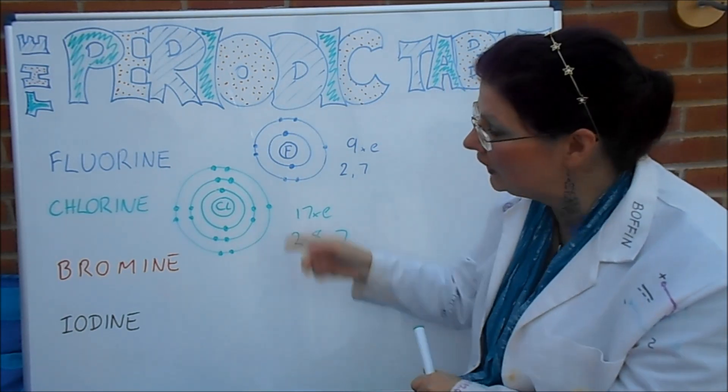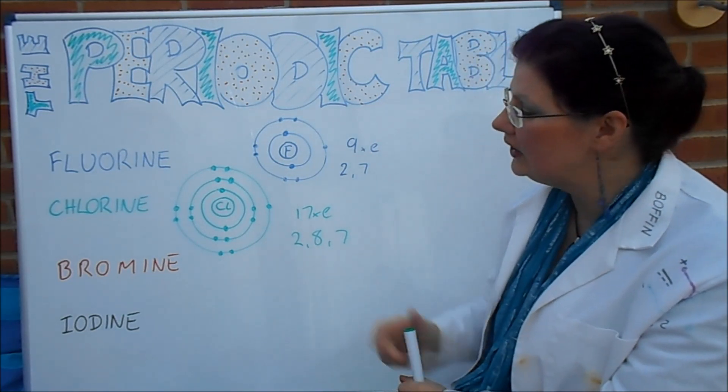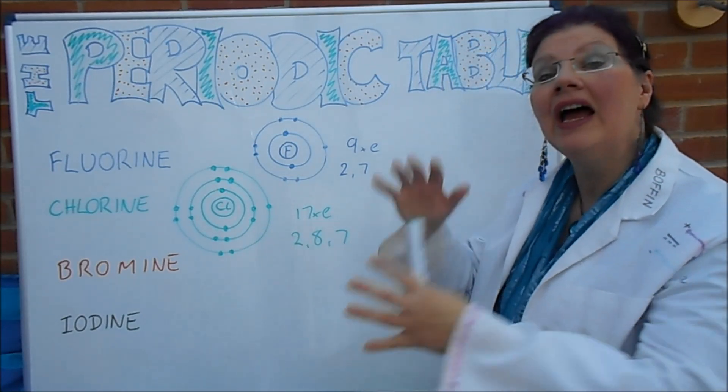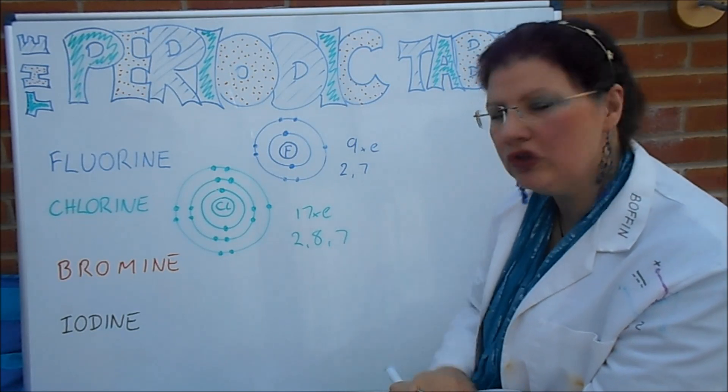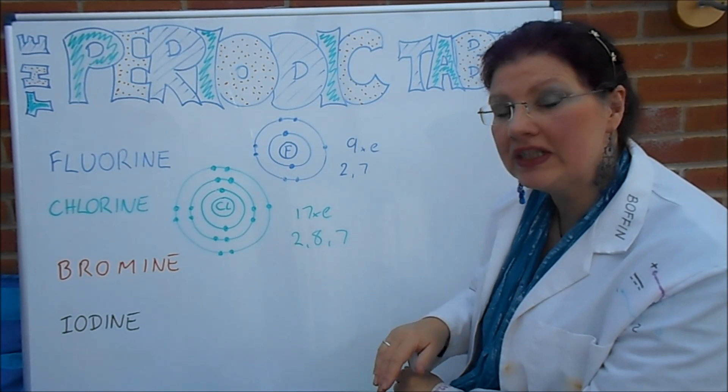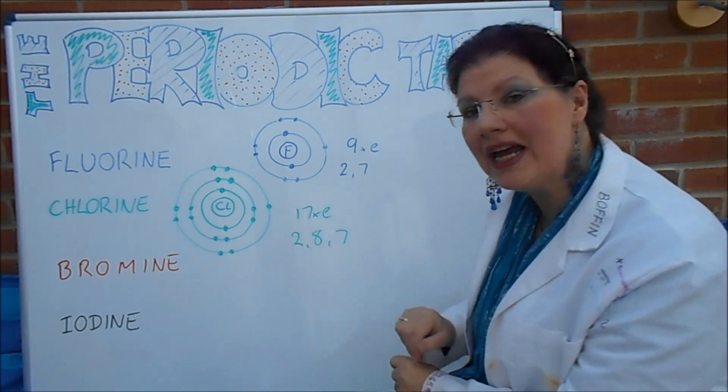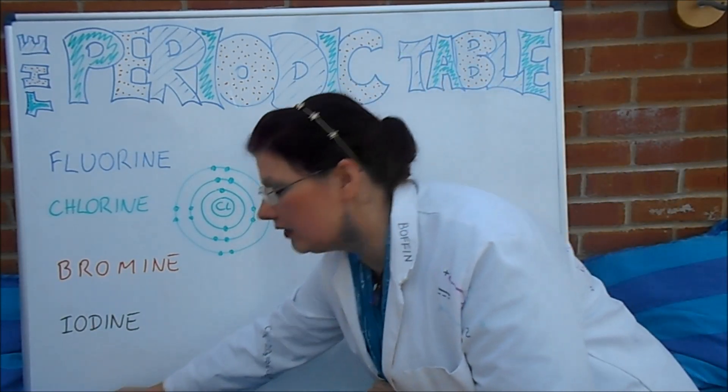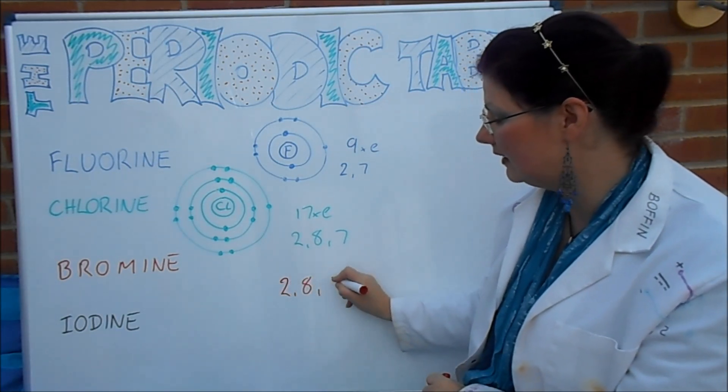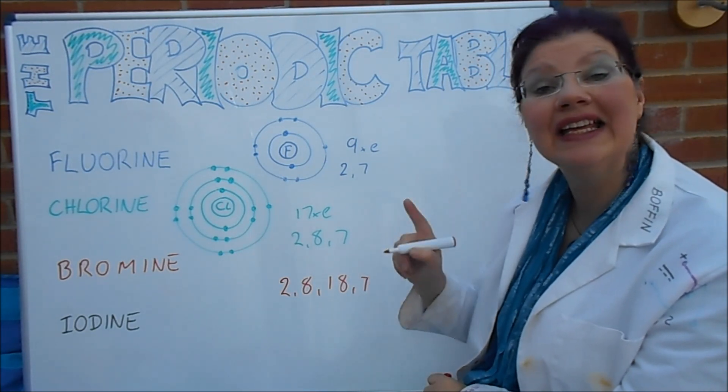Now if you fancy having a go at Bromine, you can do that. Bromine has got another ring, and it can have two on the inner ring, and then eight on the next ring, a maximum of 18 on the next, and a maximum of 18 on the one beyond that. Now I'm not going to draw that on here because I haven't really got time. But you can check that out. Look on the periodic table. See what number it is. That tells you how many protons. It's got that many number of electrons. And when you draw it out, you will find that for Bromine it's 2, 8, 18.